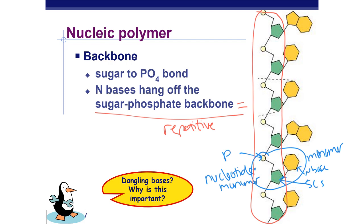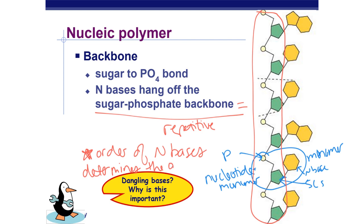The sugar-phosphate backbone is repetitive — it's exactly the same in all organisms. From person to person, person to penguin to cricket to bacteria, we all have the same sugar-phosphate backbone. It's the nitrogen bases that are going to be different. The order of the nitrogen bases is what's going to make us all different — the order or sequence of the nitrogen bases determines the genetic information.